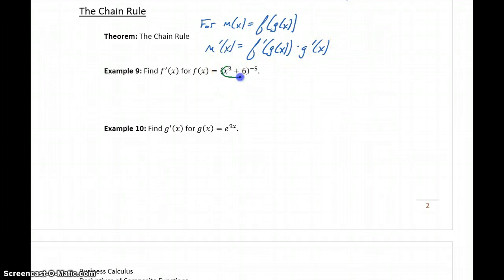In this case, our inner function is x cubed plus 6. Our outer function is u to the negative 5th. So we start off by following the rule for a power function, which means this will become negative 5 times the quantity x cubed plus 6 to the negative 6th.